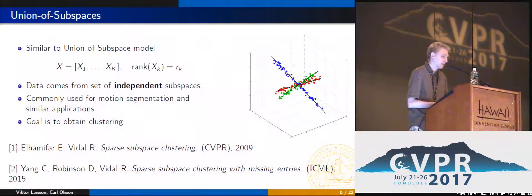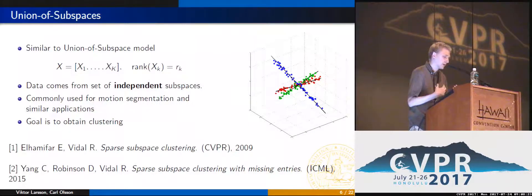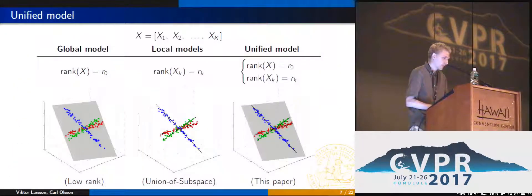This additional constraint is essentially a union of subspace constraints. In this model, we typically assume that the data comes from a set of independent subspaces, and it is commonly used for problems such as motion segmentation or other subspace clustering applications. The goal for these methods is typically to obtain the clustering. In contrast, we don't really care about the clustering — we only want to use this as extra constraints to regularize the problem of fitting low-rank matrices.